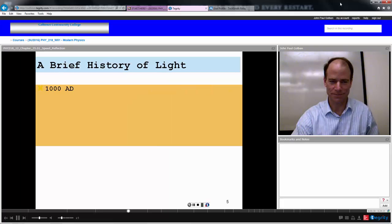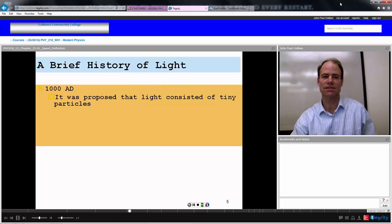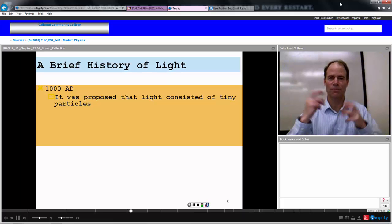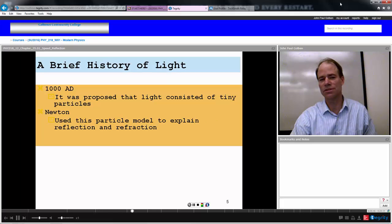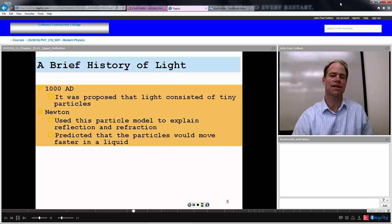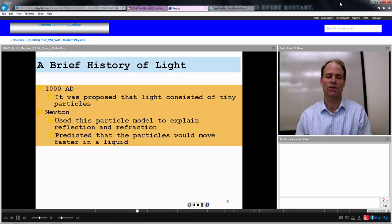Here's a brief history of light. 1000 AD, it was proposed that light consisted of tiny particles, just real tiny particles traveling from me to you and you to me. Newton uses this particle model to explain reflection and refraction. And he predicted that the particles would move faster in the liquid because the particles in the liquid would use their gravity and pull the light forward.